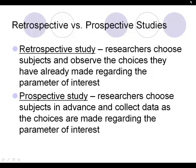You can have a retrospective observational study or a prospective observational study. The retrospective study means researchers observe choices subjects have already made regarding the parameter of interest. In a prospective study, researchers catch subjects early in life before they make those choices, then collect data and track them throughout their life.